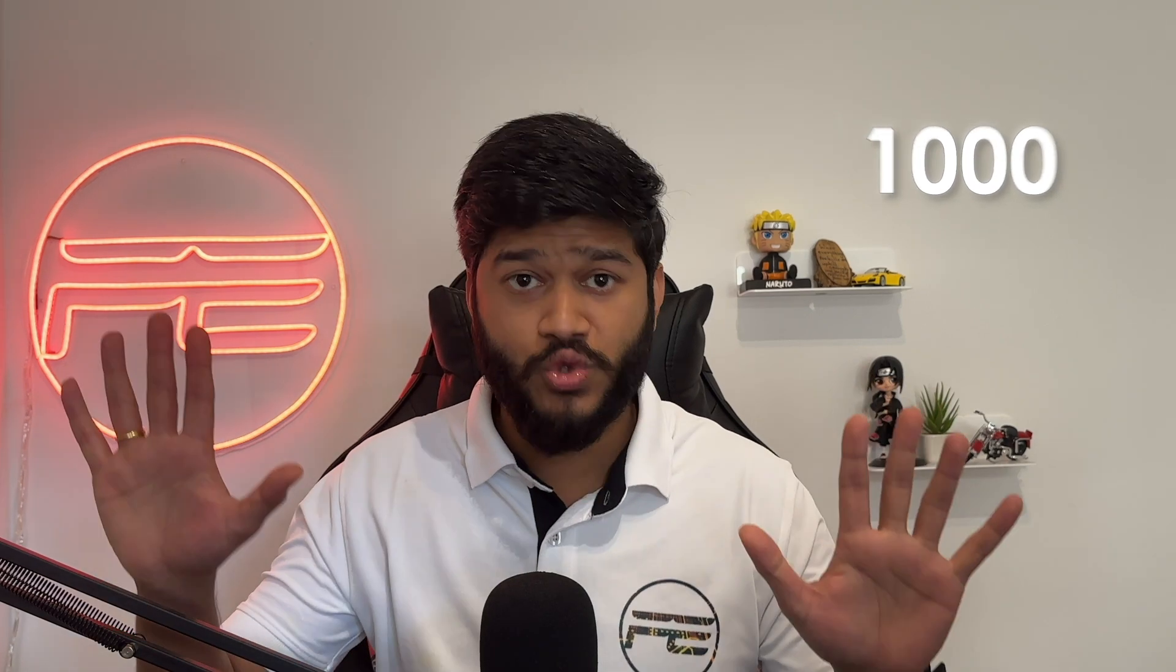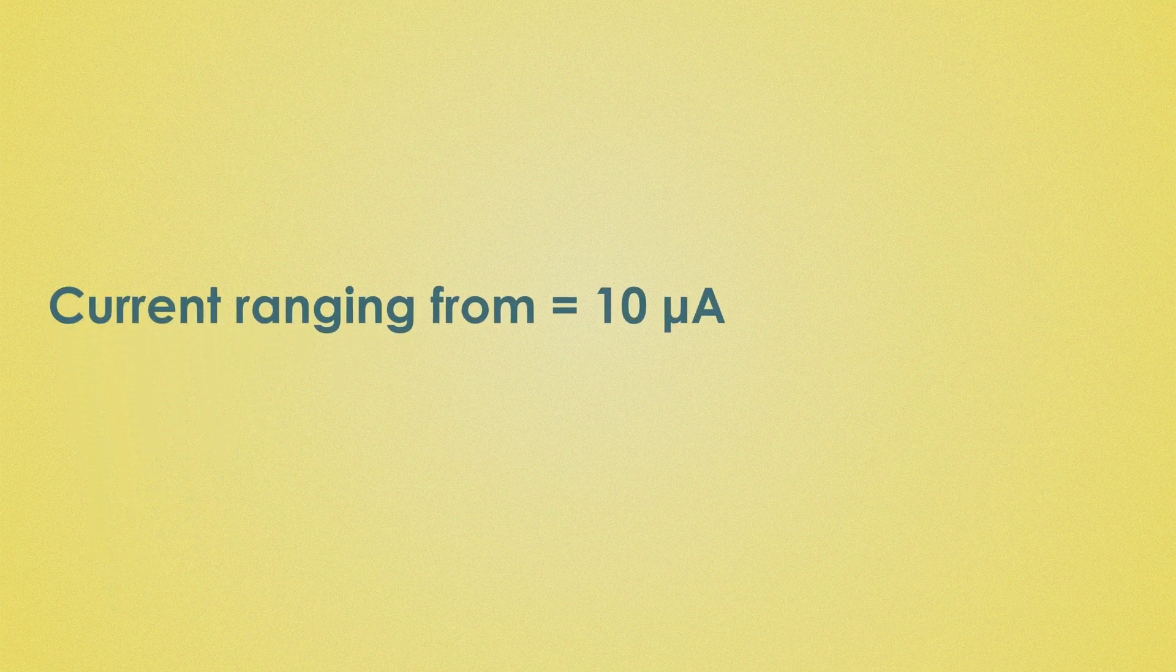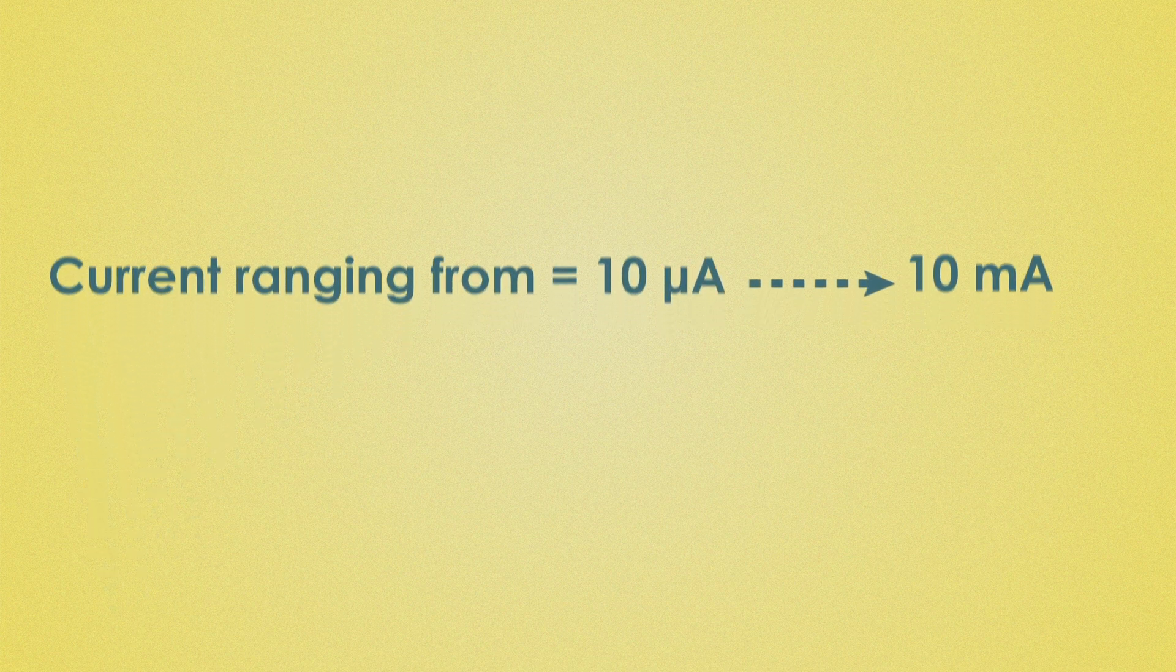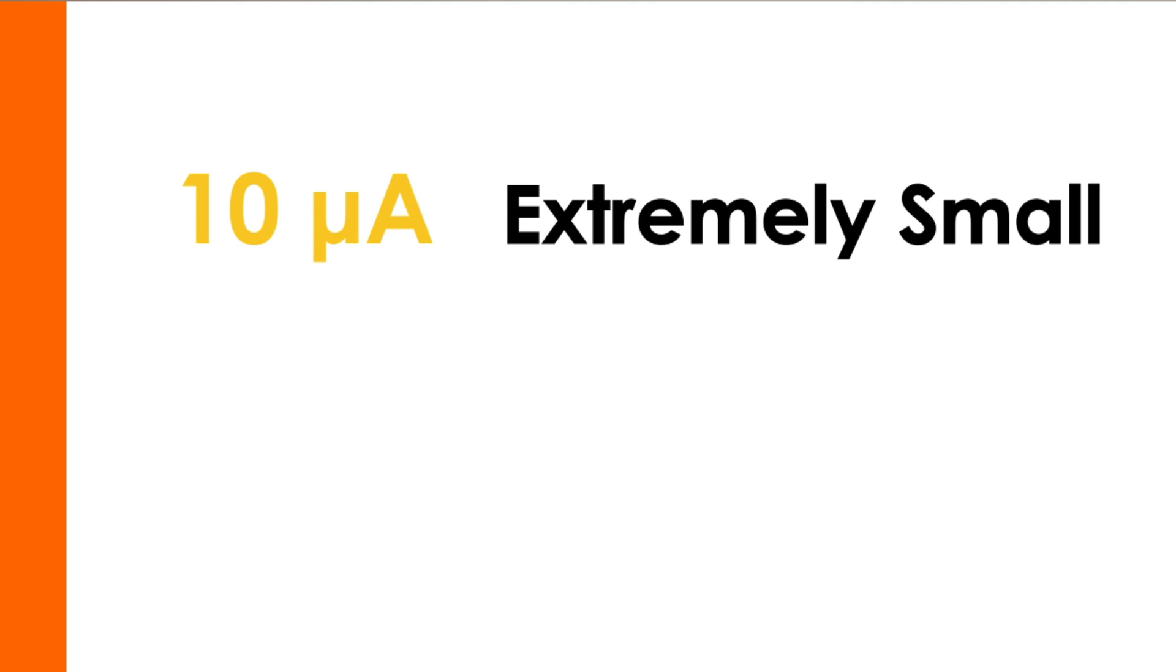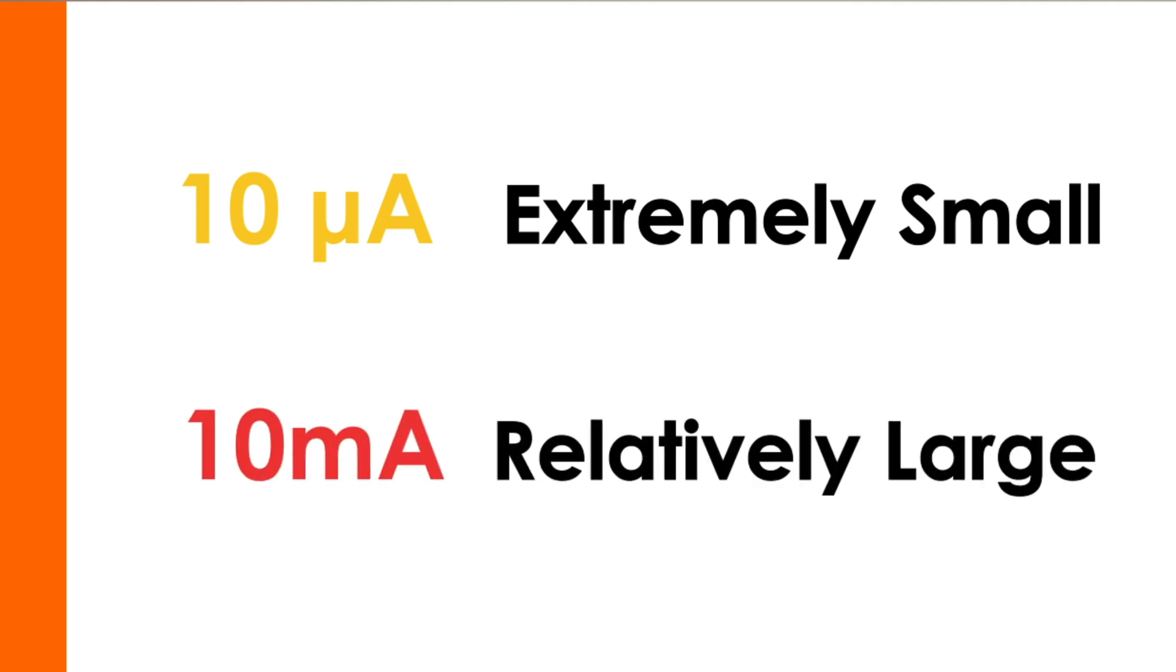So a 3-Decade range means the circuit can handle currents that vary by a factor of 1000. Now this amplifier is designed to measure the currents ranging from 10µA to 10mA. The ratio between maximum and minimum values is 1000. This time difference corresponds to 3 decades on a logarithmic scale. Why is this so impressive?